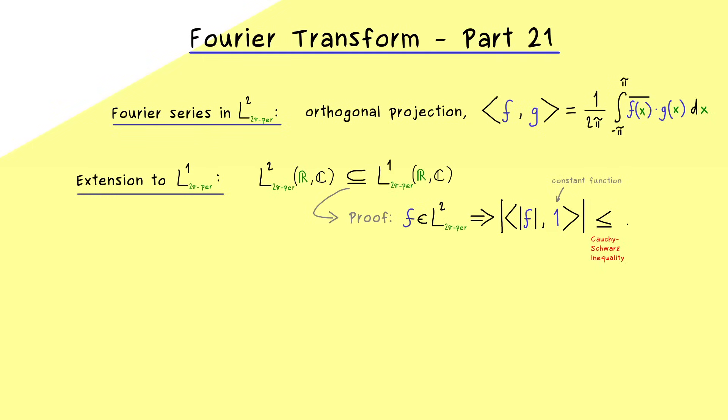Hence on the right hand side we find the product of two norms namely the one of f and the other one which is the L2 norm of the constant function 1. And there we can immediately write that the norm of this constant is 1. So this is really nice because we only have the L2 norm of f on the right hand side which means now we also want to have the L1 norm of f on the left hand side.